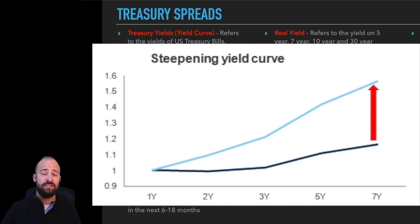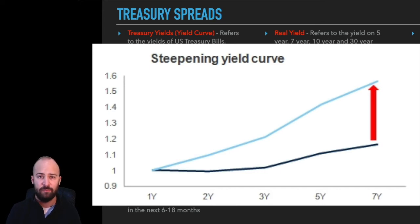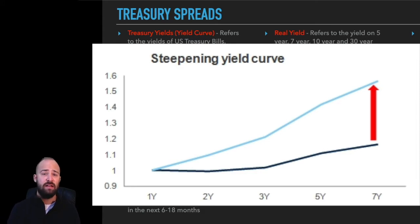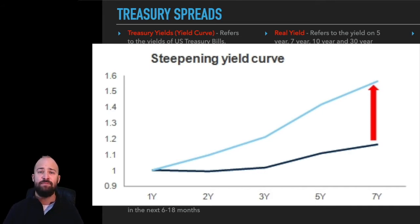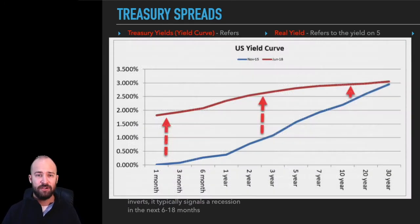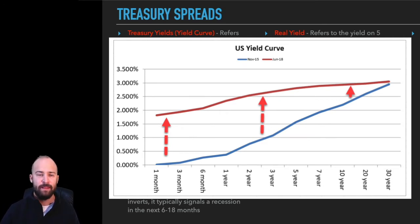When the yield curve is steepening, that means yields on longer-term treasuries are increasing relative to shorter-term yields. A steepening yield curve indicates stronger economic activity and rising inflation expectations moving forward. When the economy performs well it typically leads to rising inflation, which necessitates higher interest rates to rein in that inflation. So when you see the long end of the yield curve increasing relative to the short end, it's generally a sign that the market is optimistic about future economic conditions.